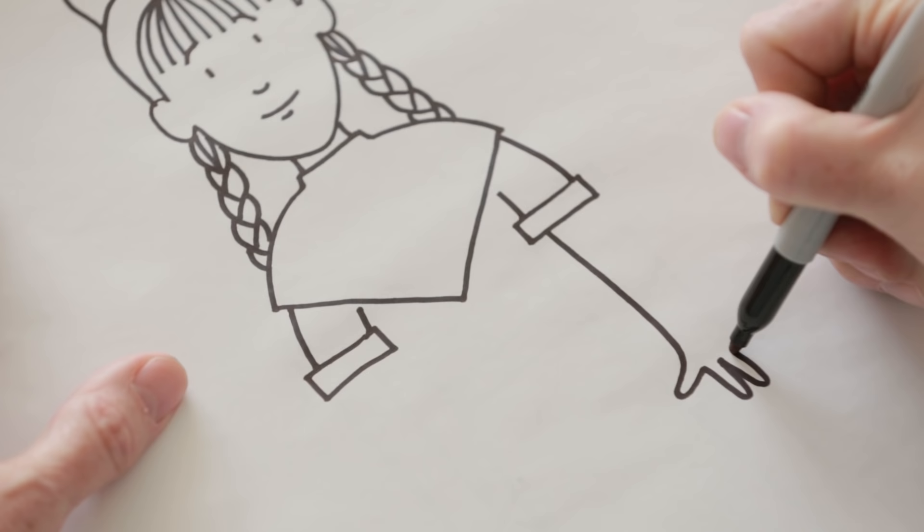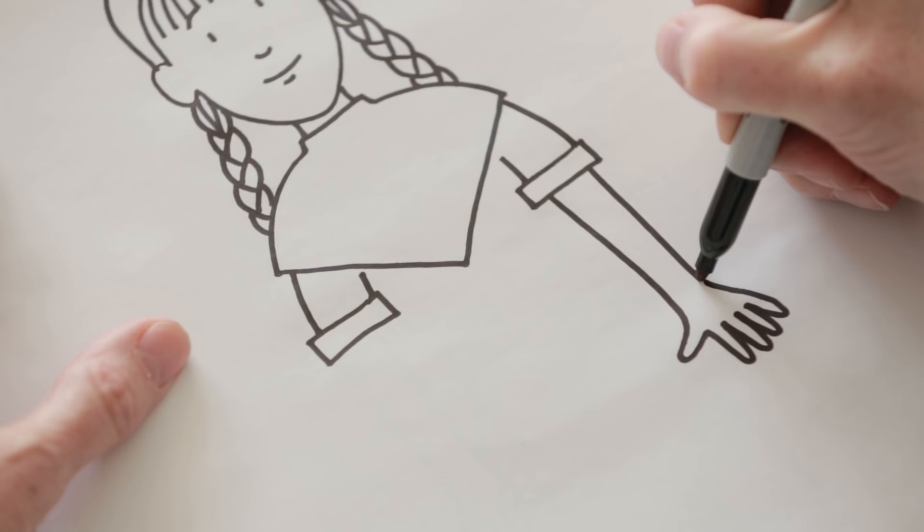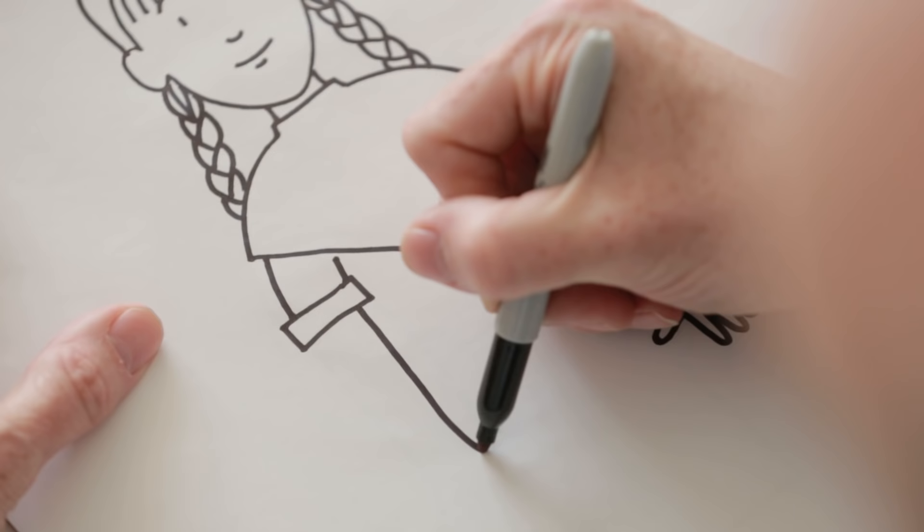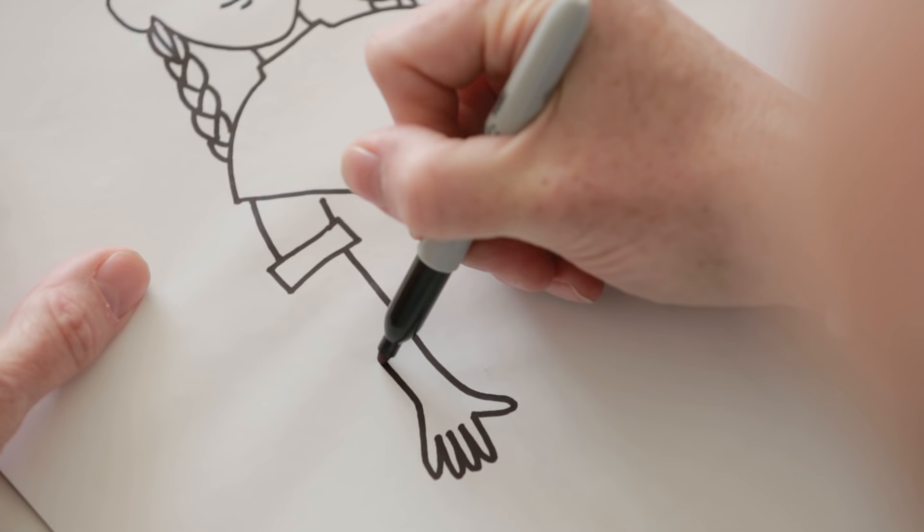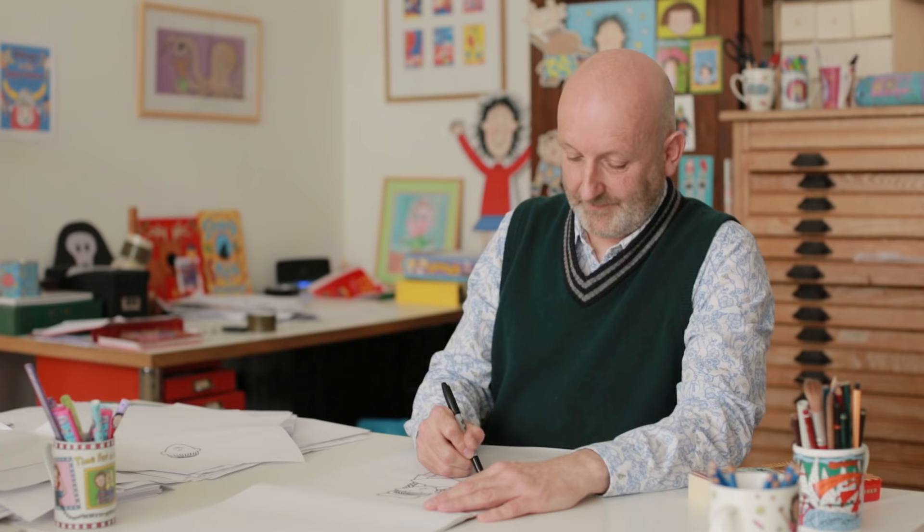And then I'm going to draw her arms at the side of her body and her hands at the end of them obviously. Now, hands can be tricky things to draw. I find them quite tricky to draw a lot of the time. But something I try to remember is that the thumb is a little bit shorter than the fingers. So I make the thumb a bit shorter.